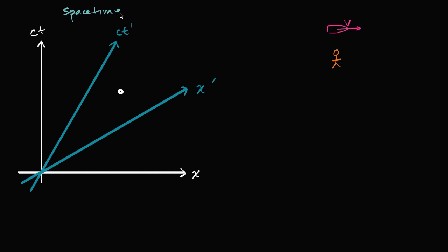The first time I heard about space-time, I assumed that people were just talking about space and time as independent things, just plotting your point in space and time. But when people talk about space-time, they're really talking about this continuum of one thing — we're just talking about different directions in space-time. They could have called it something else, but this is space-time, and it's this idea of a continuum.